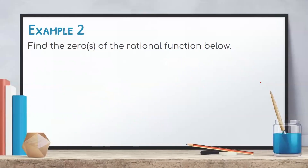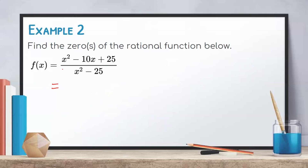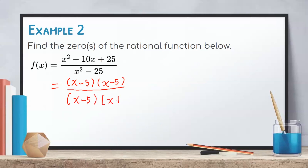Let us have another example. Find the zero of the rational function: f(x) = (x² - 10x + 25) / (x² - 25). We factor first the numerator and the denominator. The factors of x² - 10x + 25 are (x - 5)(x - 5), and the factors of x² - 25 are (x - 5)(x + 5).